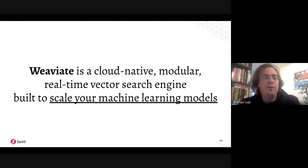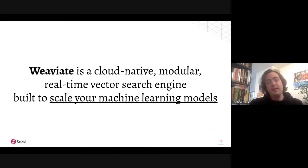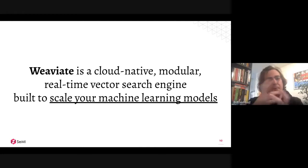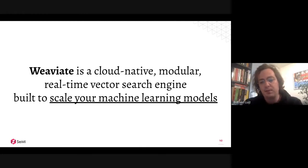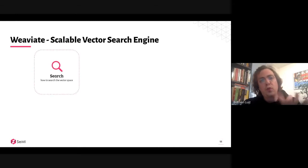Thanks to the machine learning boom, a lot of models became available to actually vectorize content. We're now going to look at text, but very soon we'll start releasing modules related to images and other things that you can mix and match.